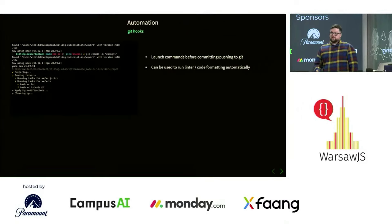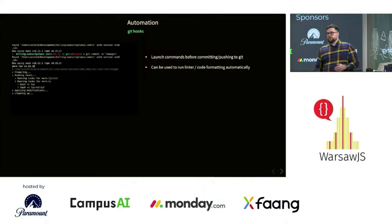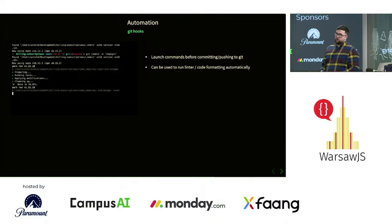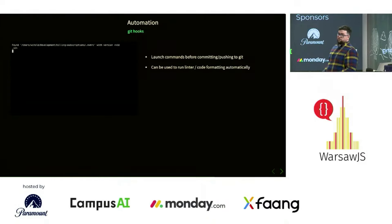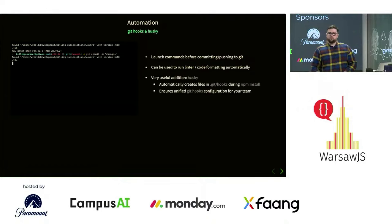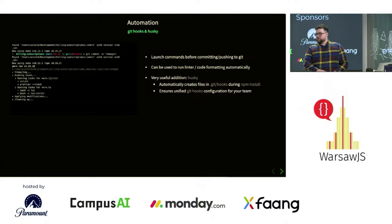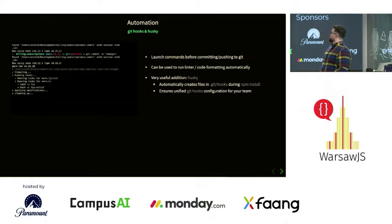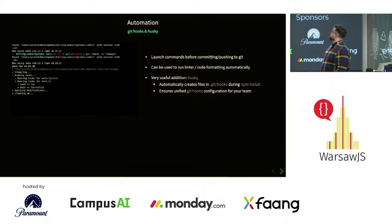Automate those things using Git hooks. Git hooks give you the ability to run lint-staged on commit or on push. Use Husky to make sure that every team member has those Git hooks applied, so you won't find out something isn't working on your CI only after they merge to master.